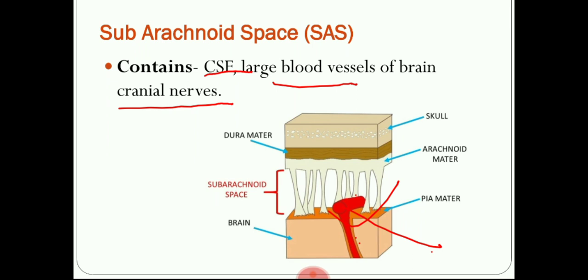Subarachnoid hemorrhage can occur either due to direct trauma or head injury, or due to some pathological condition.